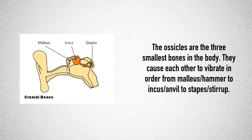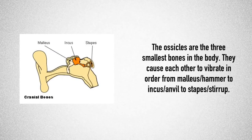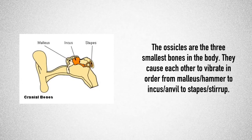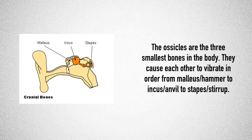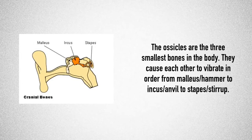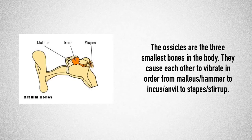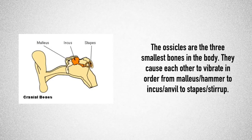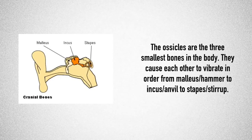The ear ossicles are the three smallest bones in the body. Together they could actually fit onto a five cent coin. The order that they vibrate in is the malleus or the hammer, onto the incus or the anvil, and the stapes or the stirrup. It's good to know the two different names for all three bones.